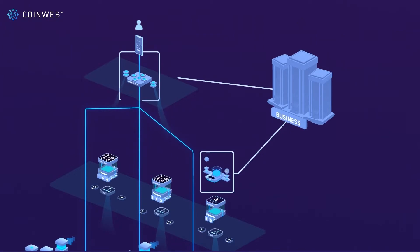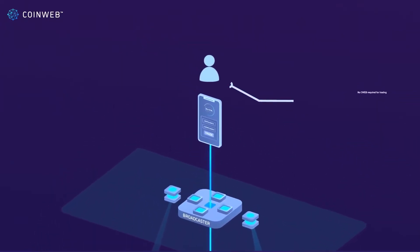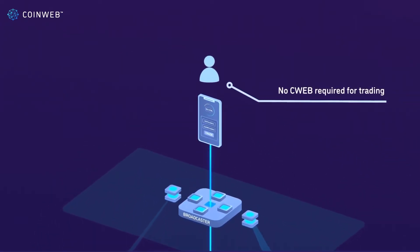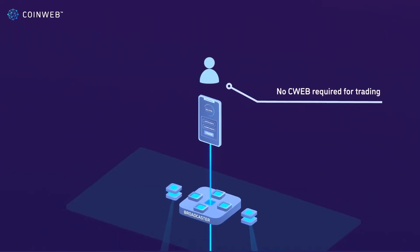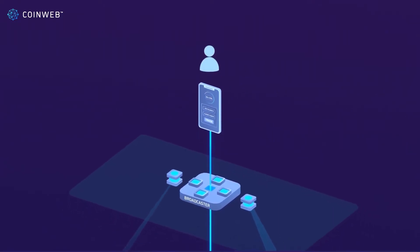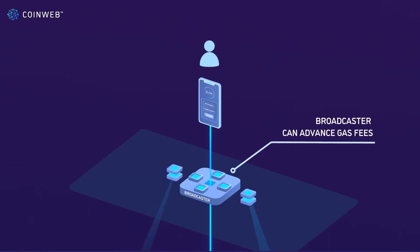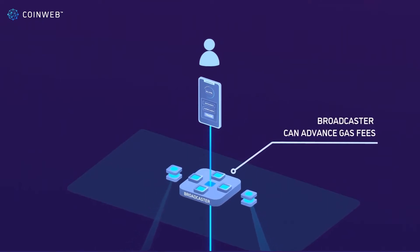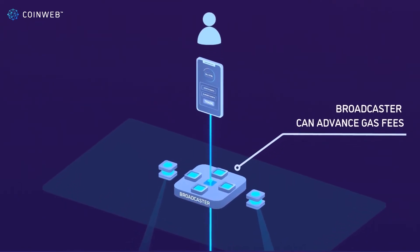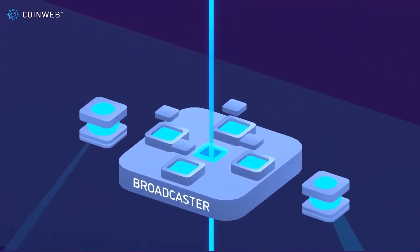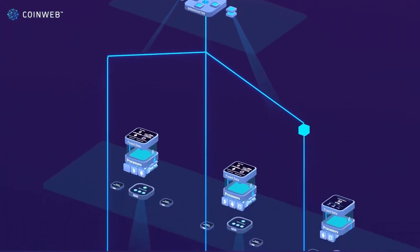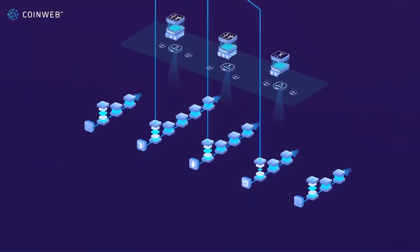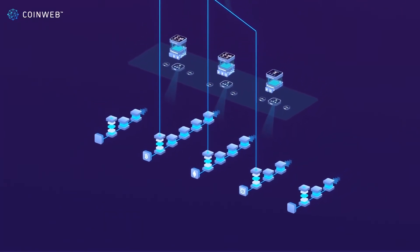Stability holders aren't required to own C-Web to exchange Stability into other currencies, the same way they would require ETH to make similar transactions on Ethereum. That's because the broadcaster can advance gas fees necessary for any transaction and be guaranteed repayment when the transaction is executed. If the user trades or uses their Stability tokens, the data is also packaged into an Elrond transaction, stored into the Elrond chain, and processed by CoinWeb's nodes, which updates the data and makes it available to the dApp.